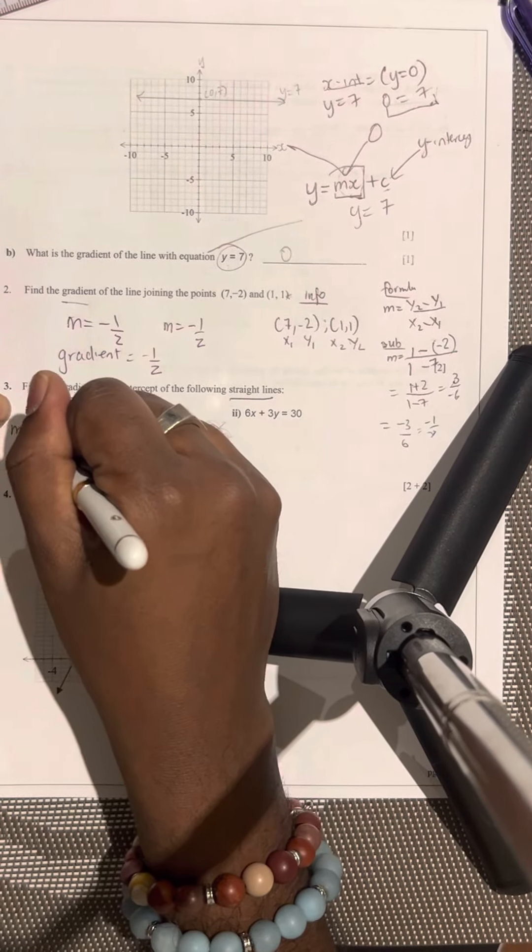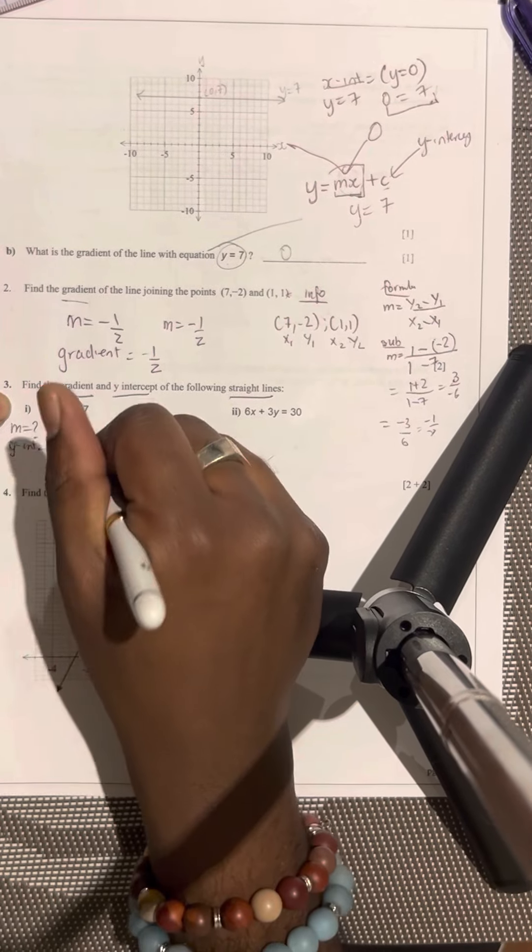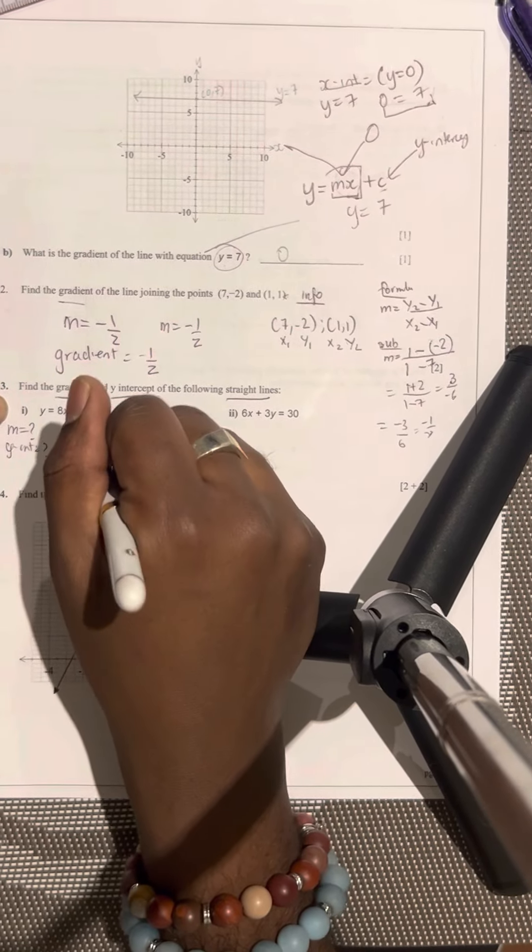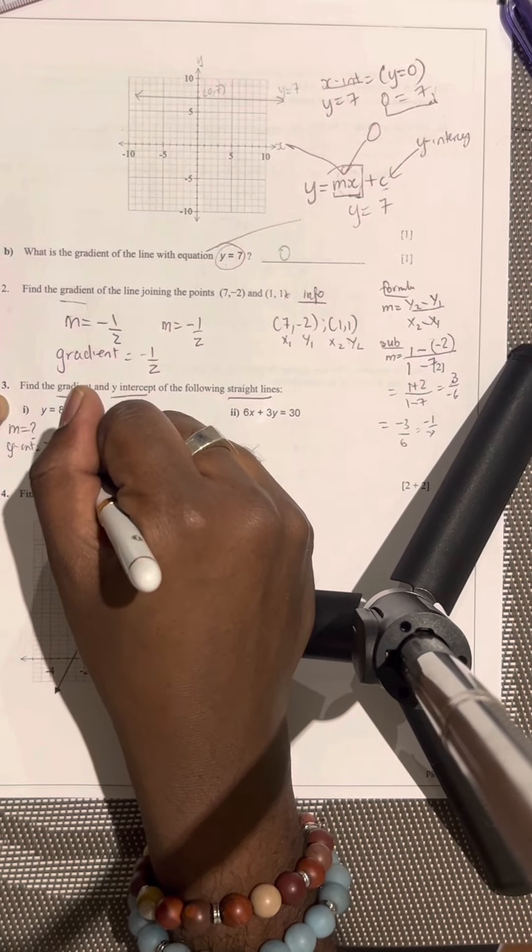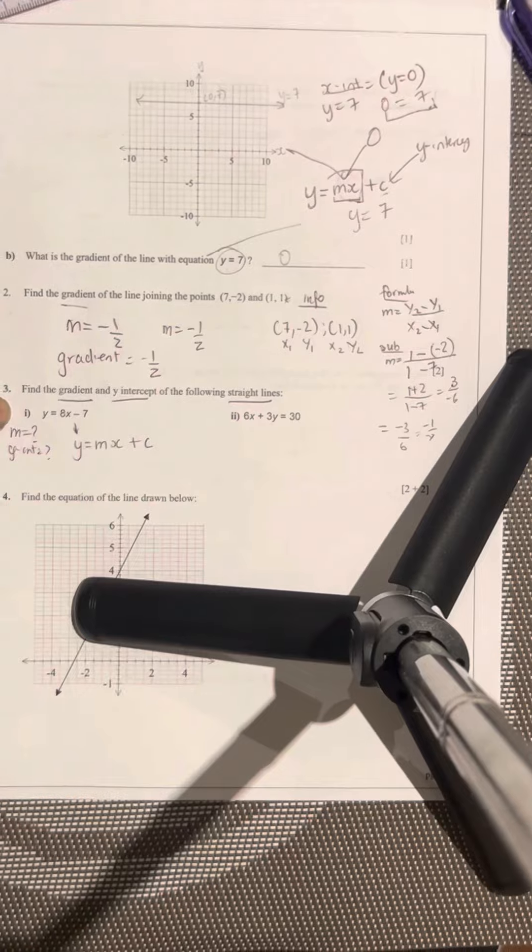So let's write that down. m is equal to question mark, y-intercept is equal to question mark. Alright, equation of the line. What is the equation of the line? y is equal to mx plus c. Okay, great.